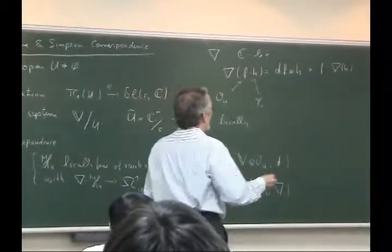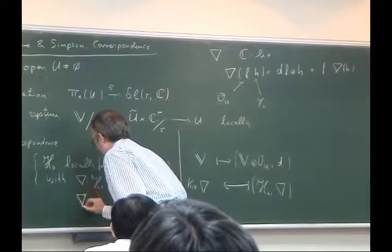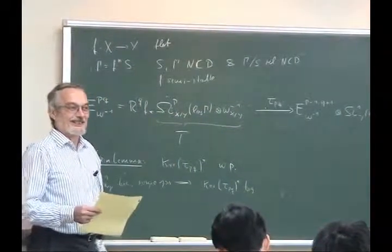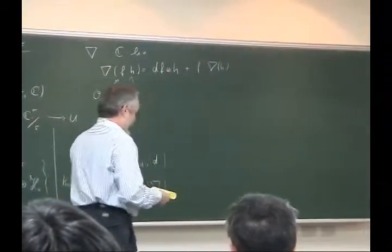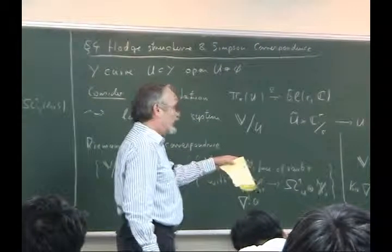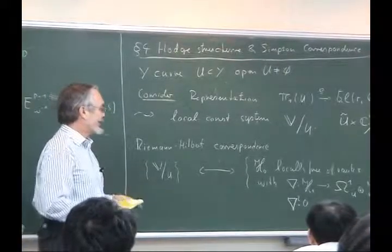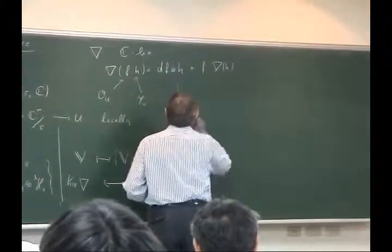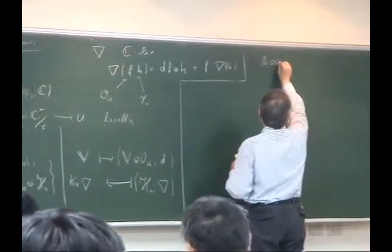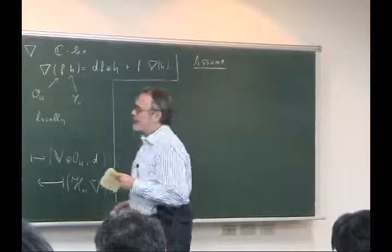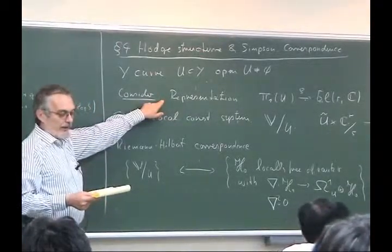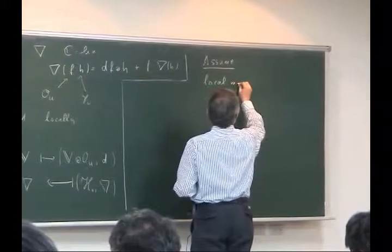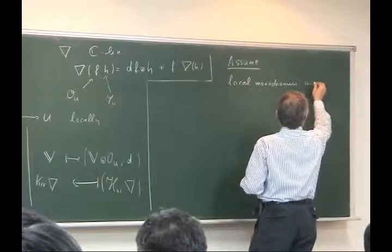Sorry — on this side you have to assume of course ∇² = 0, because if you want to show that this is a local system you need this condition. On a curve this is automatic. I will assume without repeating: I will assume always that for all my local constant systems the corresponding representation has unipotent monodromy at infinity, so assume the local monodromies are unipotent.